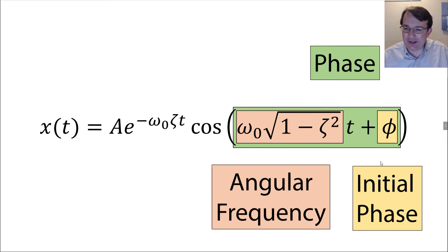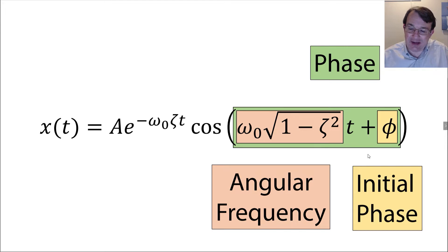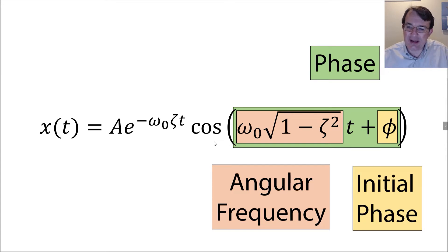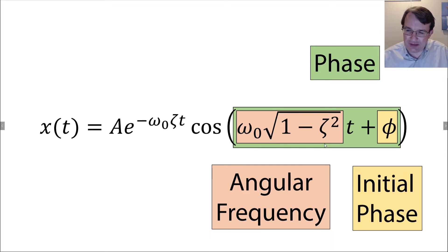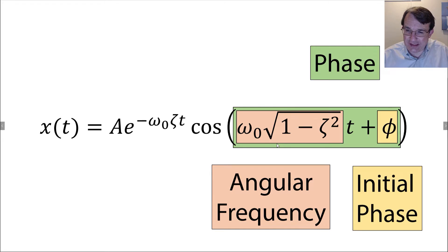The other term is the initial phase, which is exactly the same as for a simple harmonic oscillator and is determined by where the system is when we start the oscillation. If it's at maximum displacement — since we have a cosine function — then the initial phase is zero. If it's at the equilibrium position, the initial phase would be π/2. Now, the angular frequency is not equal to the natural frequency of the system.